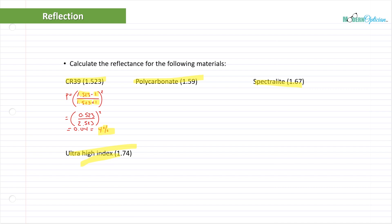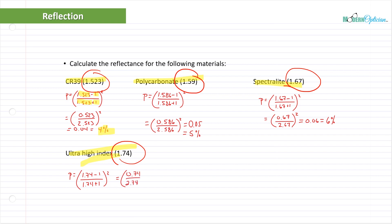As the refractive index of the material increases - polycarbonate is 1.59, higher than CR39 at 1.523, then 1.67 is higher and 1.74 even higher - the reflectance increases. We have 5% reflectance for polycarbonate, 6% for 1.67, and 7% for 1.74. Notice how reflectance increases as refractive index goes up. Why do I want you to know this?